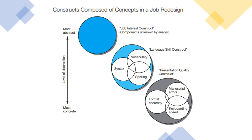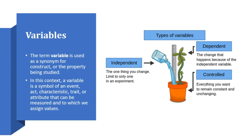Phenomena is a larger concept but subdivided in terms of constructs. So when you are moving from a concept to constructs, we are coming from the most concrete form to the most abstract form. Now moving ahead, the next one is variables.